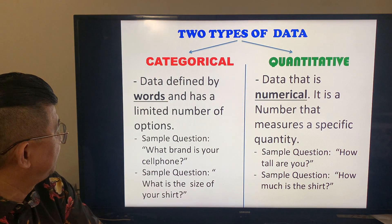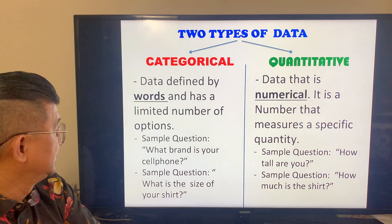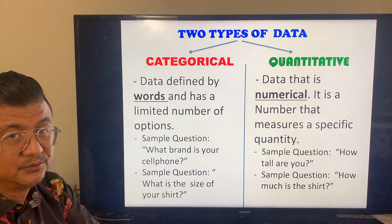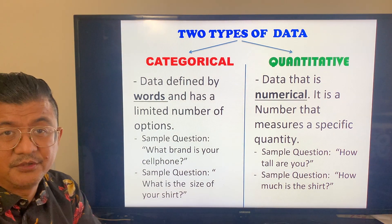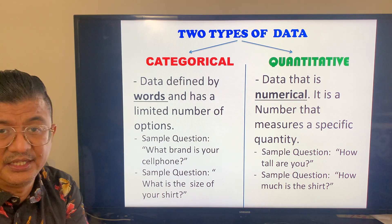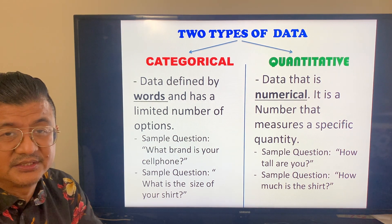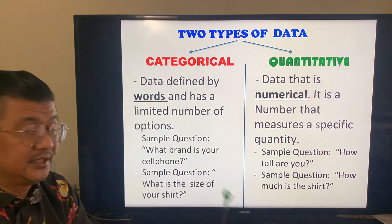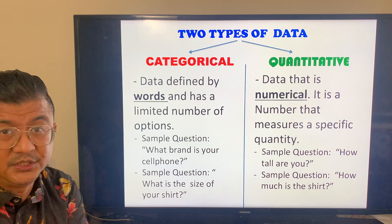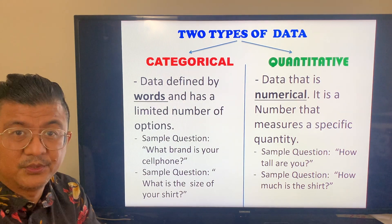Categorical data are data defined by words and have a limited number of options. Sample question: What brand is your cell phone? There's only a limited number of answers — either it's an iPhone, a Samsung, an LG, or any brand. What is the size of your shirt? You could be extra small, small, medium, large, extra large — specific words.